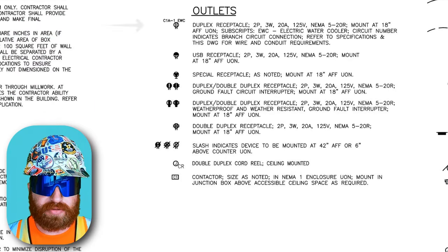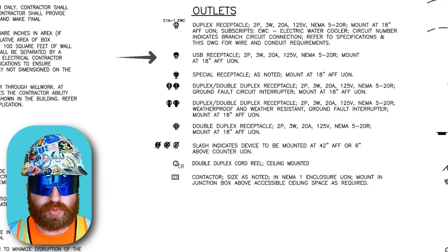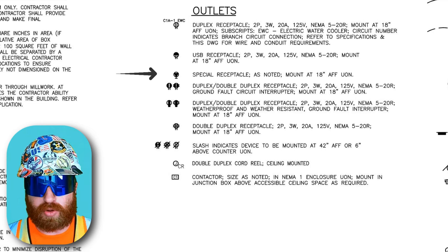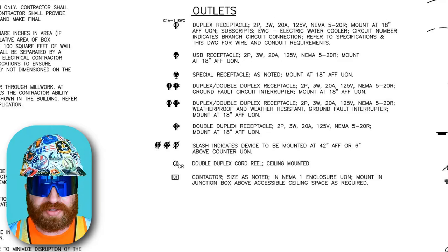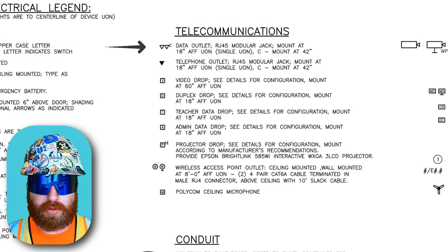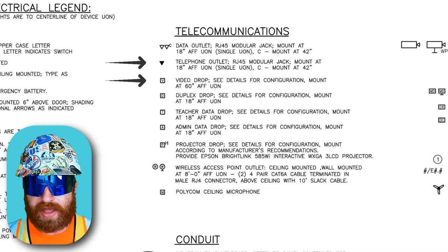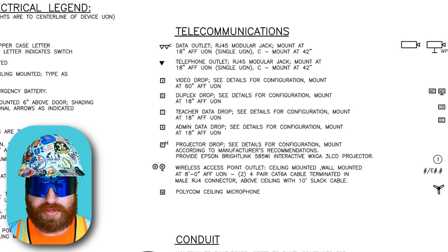Below the switches are our outlets, from the standard receptacle mounted 18 inches above finished floor to receptacles with USB ports incorporated, and special receptacles that serve non-standard equipment, as well as an explanation of the dashed lines and slashes on each receptacle symbol seen later in the plan. Moving up from there, we have telecom symbols for all our low voltage data outlets, telephone outlets, audio-visual outlets, and wireless access points — denoted WAP — which is what provides Wi-Fi within the building.